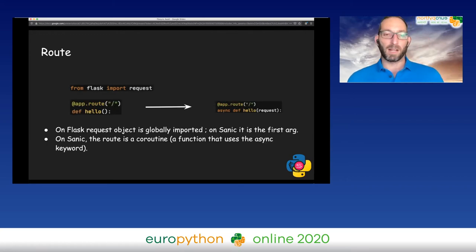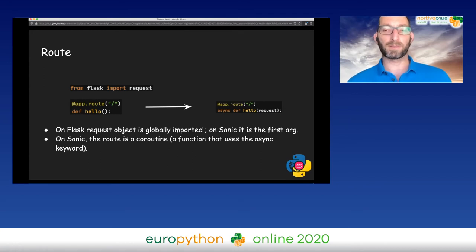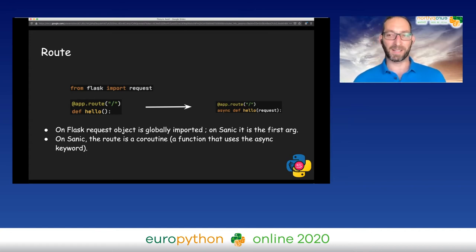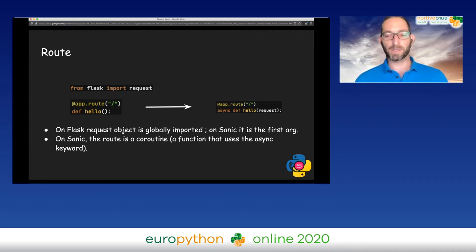Let's talk about routes. The decorator remains the same at app.route. But there are a couple of differences. On Flask, the request object is globally imported. With Sanic, it is the first argument — it's a dependency injection, so whenever you have a route, the request is always the first argument. Another difference is that on Sanic, the route is a coroutine — a function that uses the async keyword.